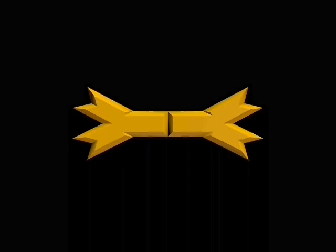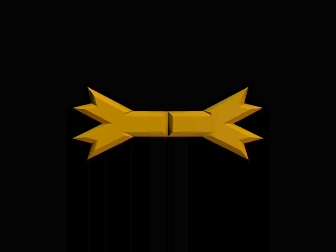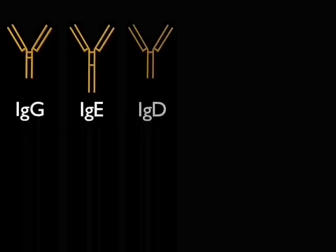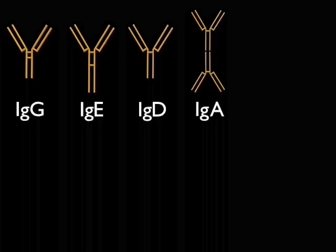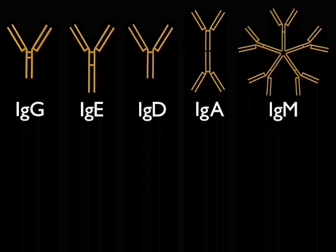Antibodies, or immunoglobulins, can be subdivided into different classes according to their structure. There are five classes, called IgG, IgE, IgD, IgA, and IgM, each having different functions.